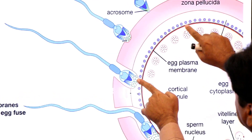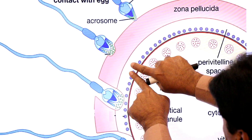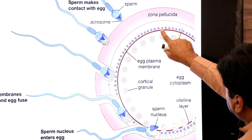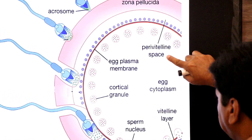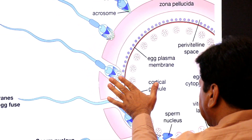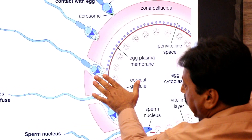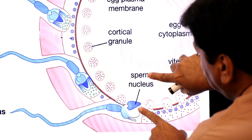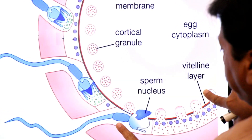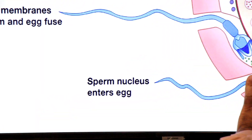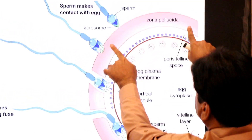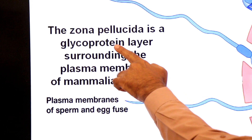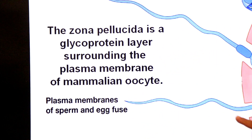The sperm head penetrates the zona pellucida and plasma membrane of the egg. There is a perivitelline space between the zona pellucida and the cell membrane of the oocyte. Only the nucleus of the sperm — the head region — enters the egg. The middle piece and the tail remain outside and are dropped off.